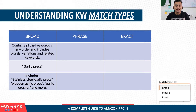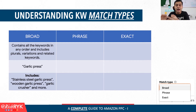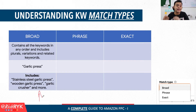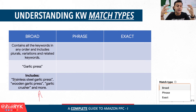The broad match type would basically match all keywords in any order, including plurals, variations, and related keywords. For example, let's say you set 'garlic press' as your manual ad keyword and you decide to keep it as a broad match type. Then all of these example keywords you see here will potentially show your ad if your bid is right. When the customer searches for 'stainless steel garlic press,' your ad can show up. When a customer searches for 'wooden garlic press,' your ad can still show up. When a customer searches for 'garlic crusher,' your ad can still show up, because Amazon's system would know that 'garlic crusher' basically means something like 'garlic press' — they are related — and therefore it will show the ad to the customer. That is what broad match type means.